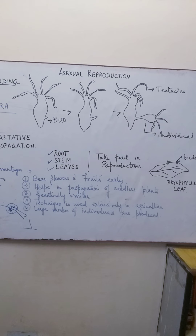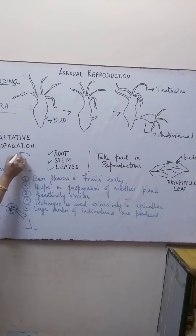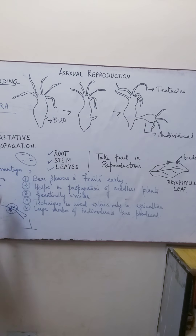Potato is a very good example. You must have seen the eyes of the potato. And nowadays in the rainy weather, you can see small buds coming out from it. If you cut that portion and grow it, it will develop as a new plant.